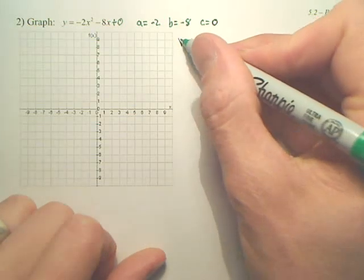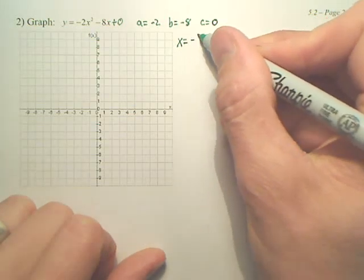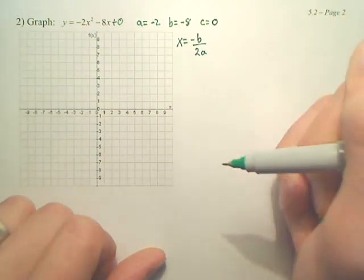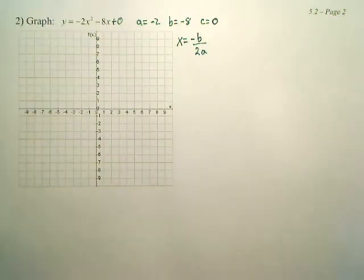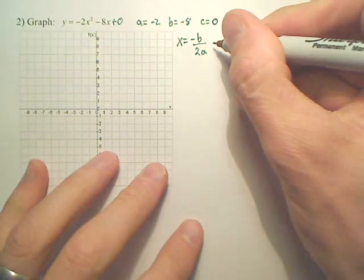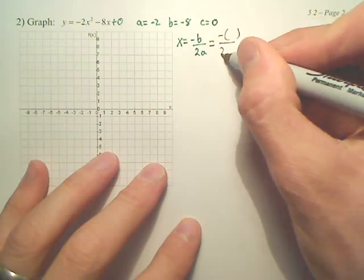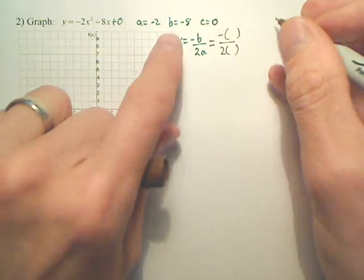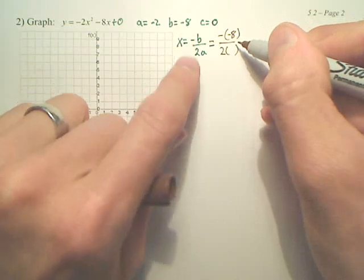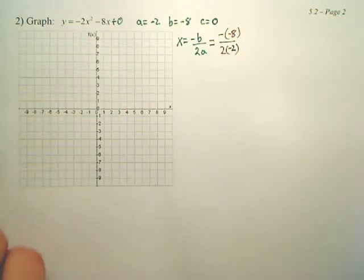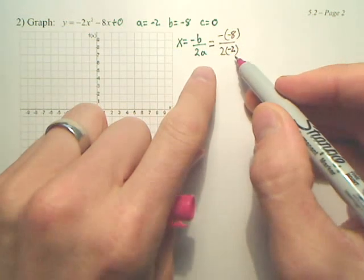Our formula to find the line of symmetry to start this type of problem, you need to know that formula. You cannot do anything without this formula. So, the opposite of b over 2a. So, b is negative eight and a is negative two. The opposite of b over 2a.